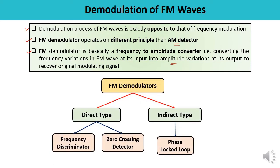There are two types of FM demodulators: one is the direct type and the other is the indirect type. In the direct type, there are two categories — one is the frequency discriminator and the other is the zero crossing detector. The indirect type of FM demodulator is the phase locked loop.